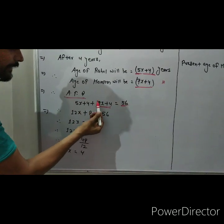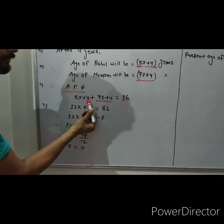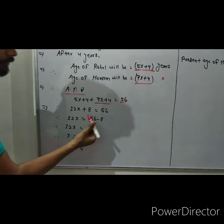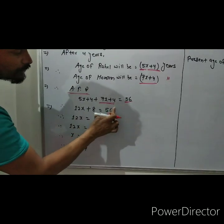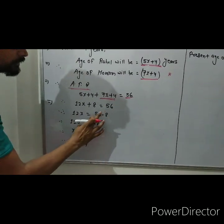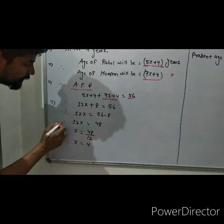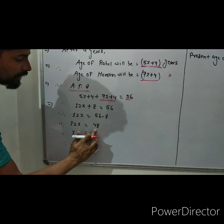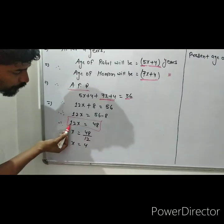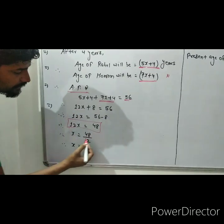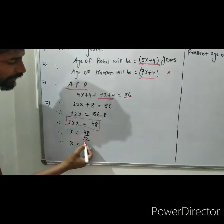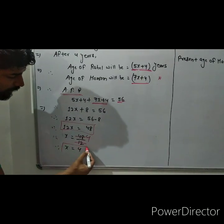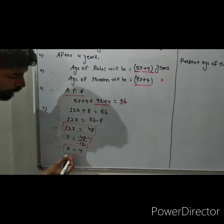Now 5x plus 7x is 12x, and 4 plus 4 is equal to 8. So 12x plus 8 is equal to 56. Therefore, when 8 goes to the right hand side, it becomes 56 minus 8, which is 48. So 12x is equal to 48, and therefore x is equal to 48 divided by 12, which equals 4.